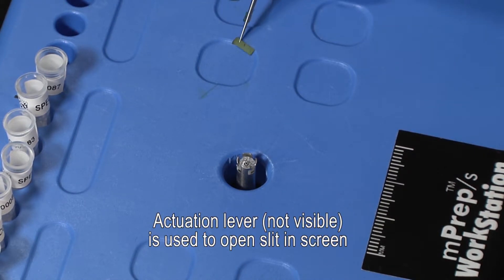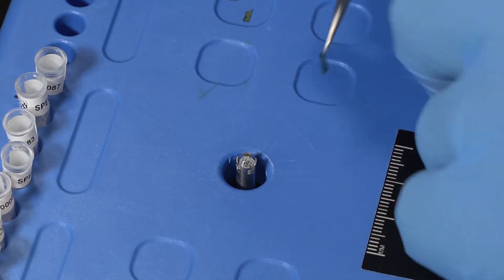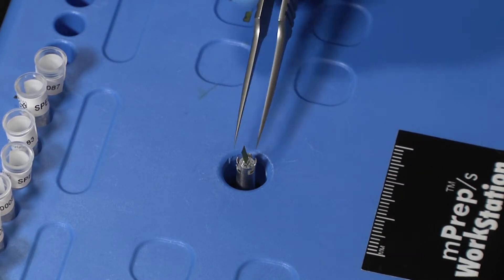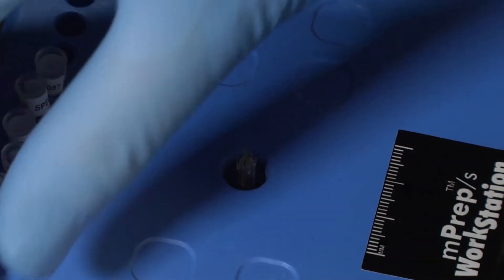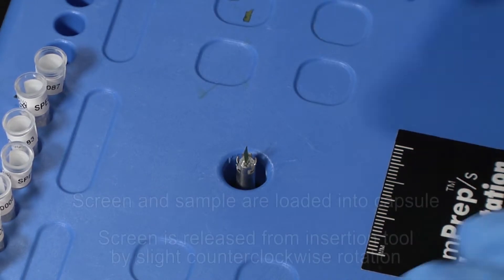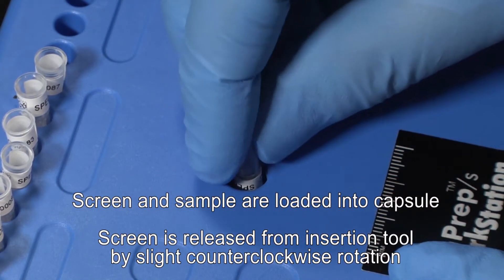Pressing the actuation lever opens the screen slit. The sample is then inserted and the lever released to clamp the specimen. An empty capsule is then placed over the insertion tool, rotated counterclockwise to release the tabs and then lifted off.